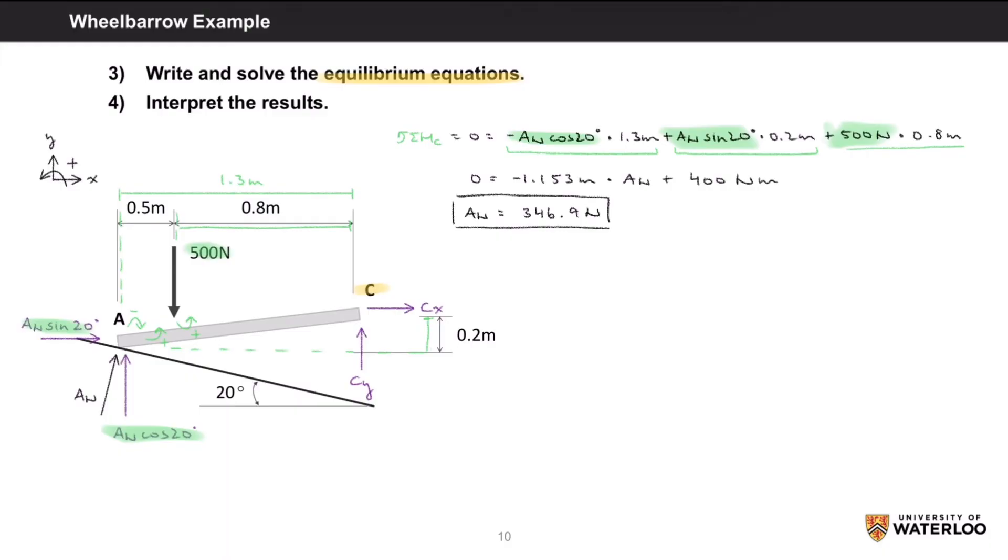Next, calculating the sum of forces in the horizontal direction, the sum of fx equals zero will account for AN times sine of 20 degrees and Cx. Our equation will be zero equals AN times sine of 20 degrees plus Cx. This gives us a value of negative 118.6 newtons for Cx. As you can see here, we did get a negative value which tells us that Cx will act to the left, opposite to our assumption. And this makes sense since we know that it will require a force to the left to push the wheelbarrow along the ramp.